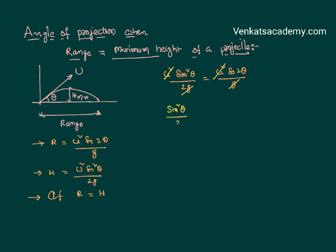What's remaining is sin square theta by 2 equal to sin 2 theta. As per trigonometry, sin 2 theta is equal to 2 sin theta cos theta. Now I can cancel one sin theta. What is remaining is sin theta by 2 equal to 2 into cos theta. Then sin theta by cos theta equal to 4. Tan theta equal to 4.